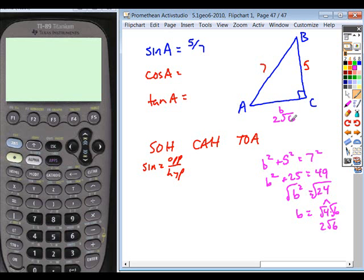Therefore, when I set up my problem, I get a cosine ratio of adjacent, two root six, over hypotenuse seven. And I get my tangent ratio of five over two root six.